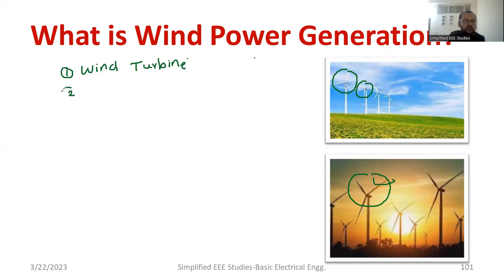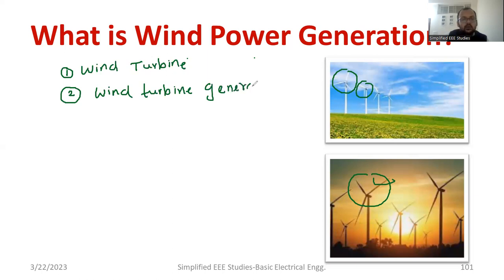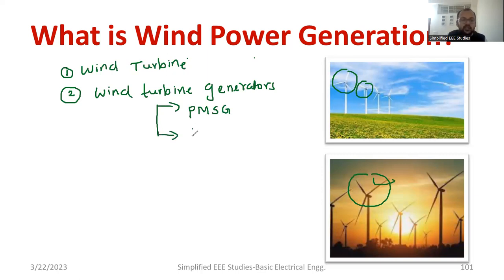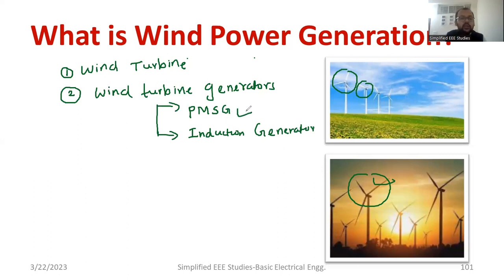The second component we require is generators — wind turbine generators. Usually two types of wind turbine generators are employed: the first type is the permanent magnet synchronous generator, abbreviated as PMSG, and the second type is the induction generator. PMSG is the most commonly employed.